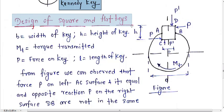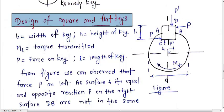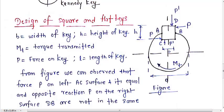So move on further. Design procedure for square and flat key. The key has width of b, height of key is h, and the torque transmitted to the shaft is Mt.